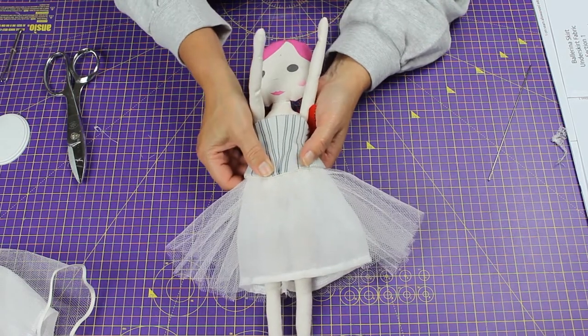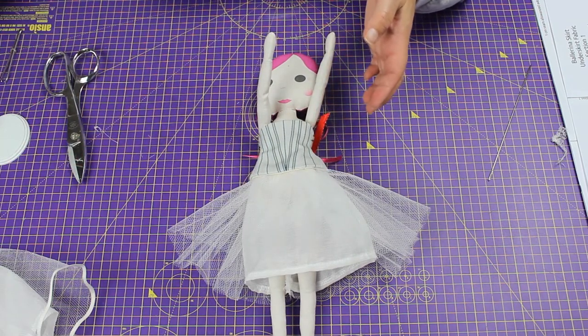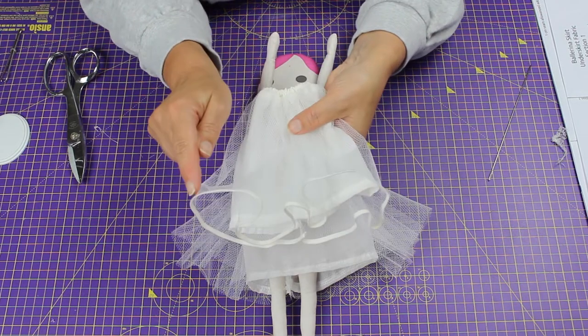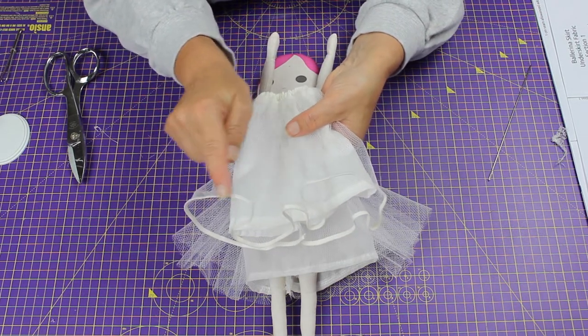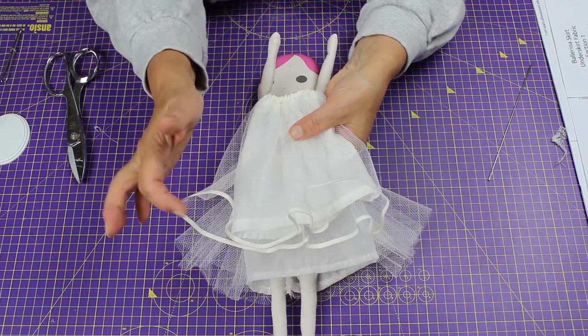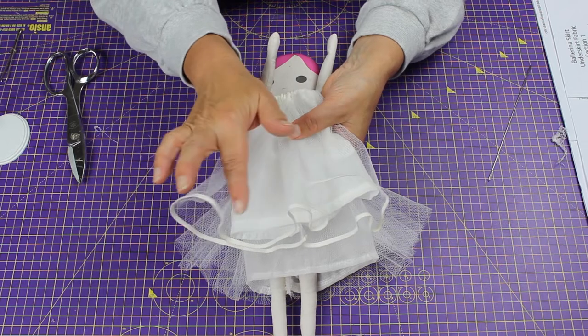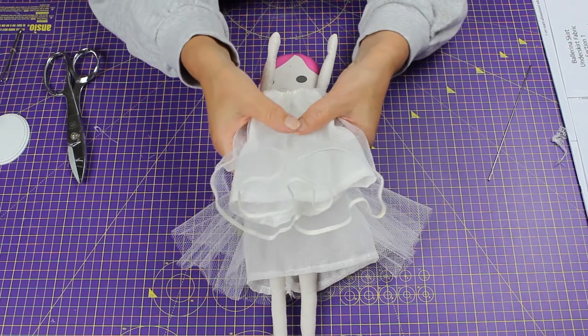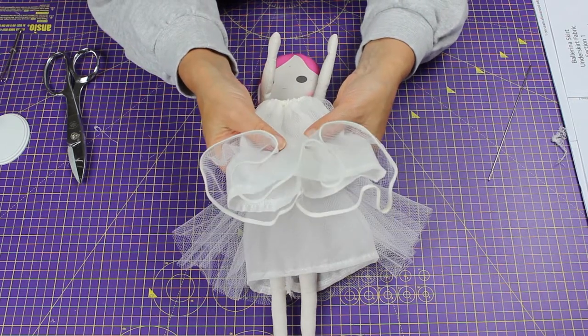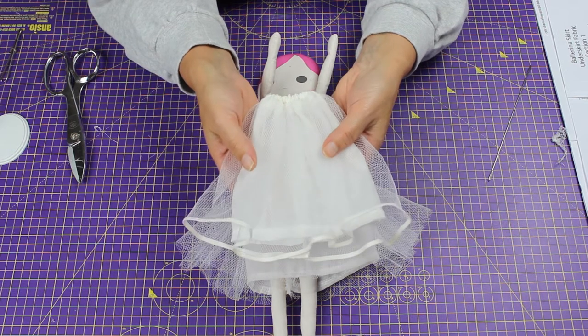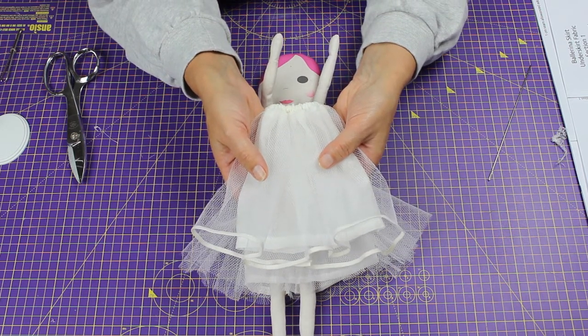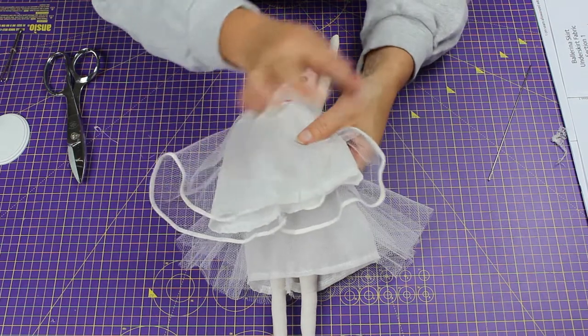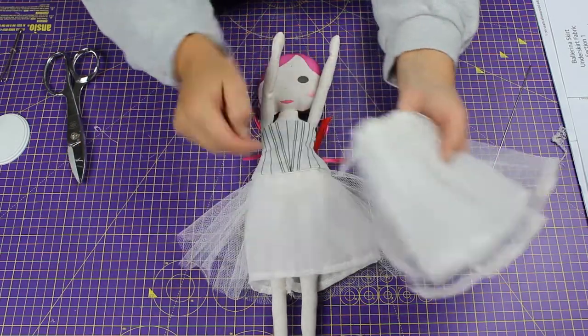There we have Sumiko's netted skirt. I want to show you something really beautiful you can do as well. I made this one earlier. If you pop satin bias binding on the edge of the net before you attach it, it's a really good idea and it's really pretty. It's simply a case of just popping it on the edge of the net before you stitch up the center back.